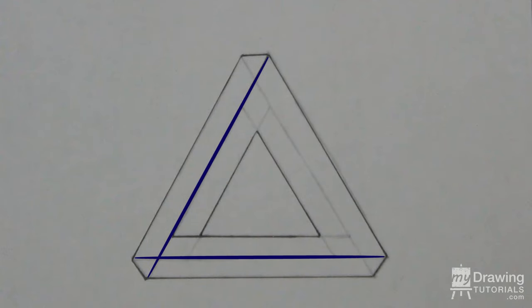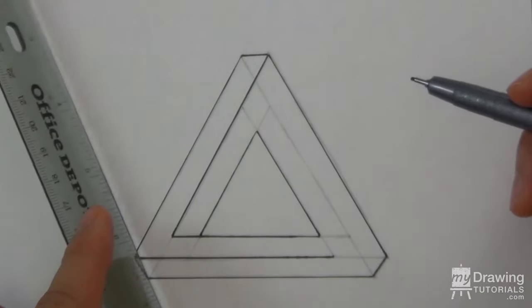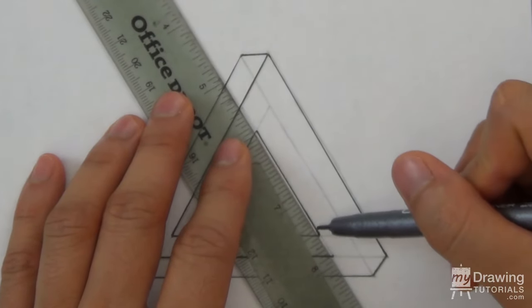Now let's do the same thing for this corner. Again you have two roads to choose from. But since this one is already used, we'll have to use the other one. And again, once you get to the far end of the small triangle, make a turn to connect to it.